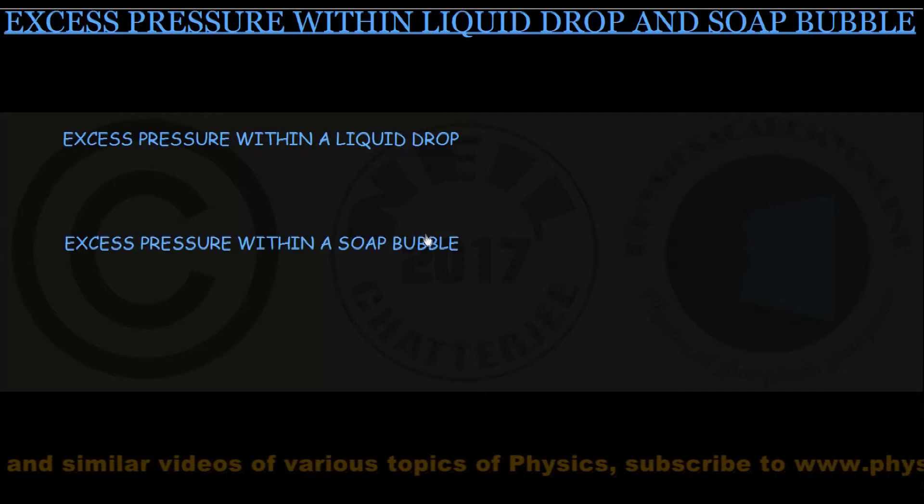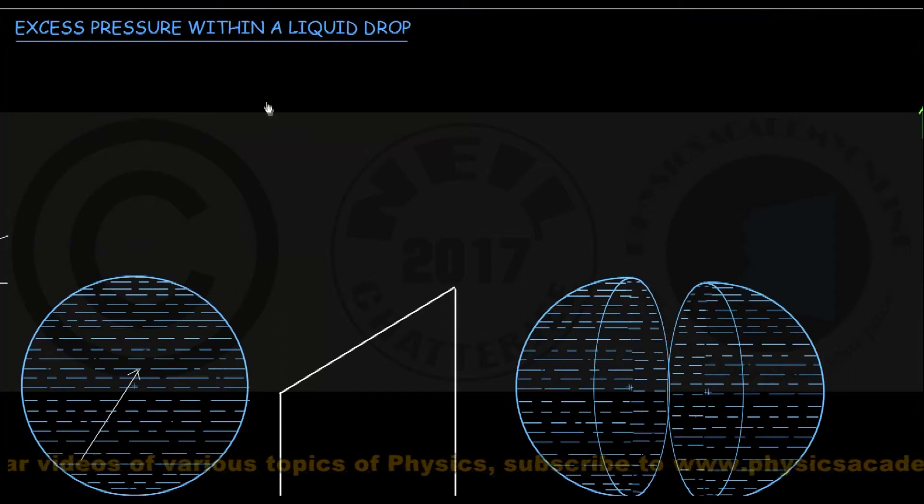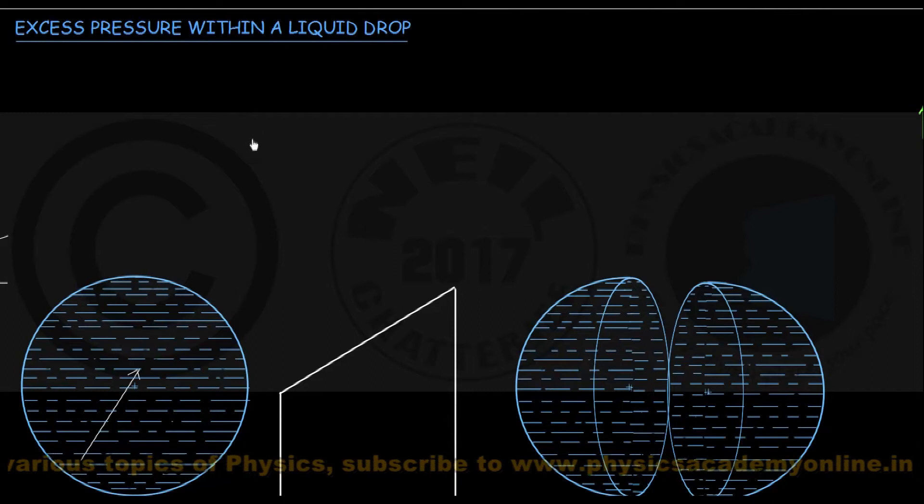I have already said that in a small drop of liquid, the force of surface tension predominates over the force of gravity, and therefore the drop takes spherical shape. But what prevents the surface area of the liquid to contract further is the excess pressure that builds up within the drop.